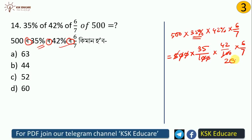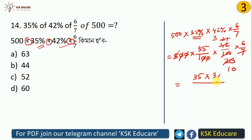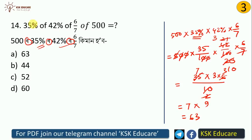Continuing the calculation: 35 into 3 into 6 divided by 10. We get 25 times, then simplifying further gives 9. So the result is 63 divided by... working through the arithmetic step by step gives the final answer, and Option B is correct.